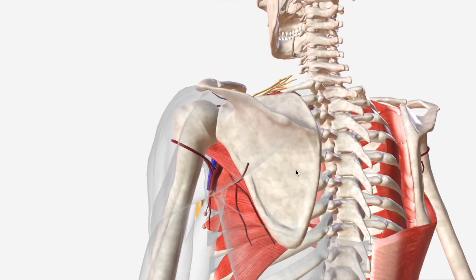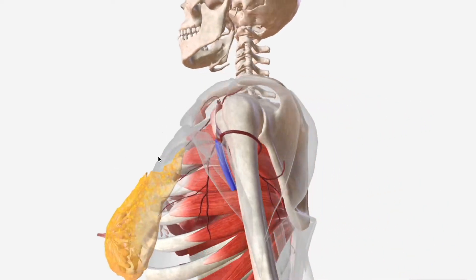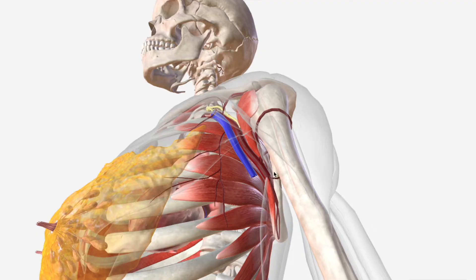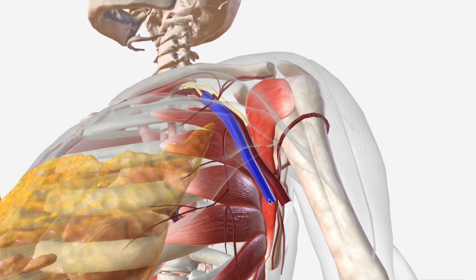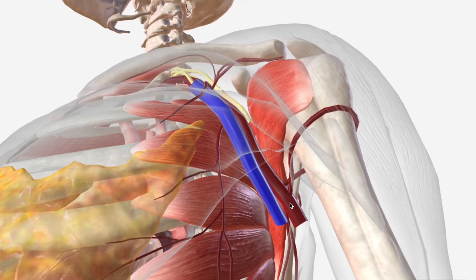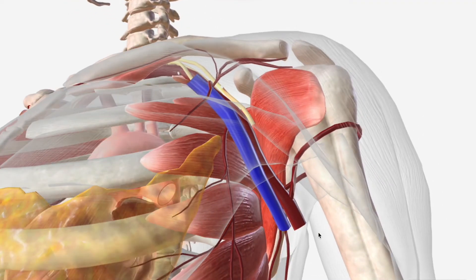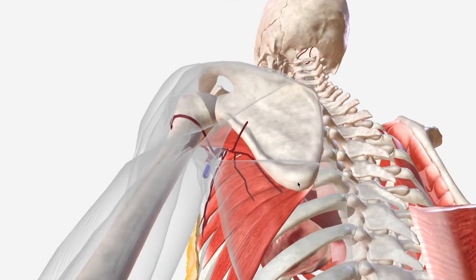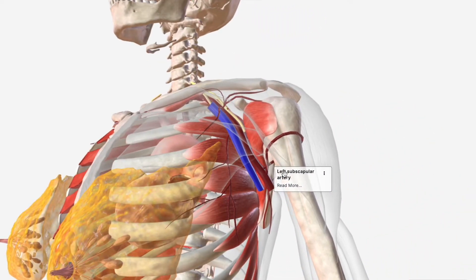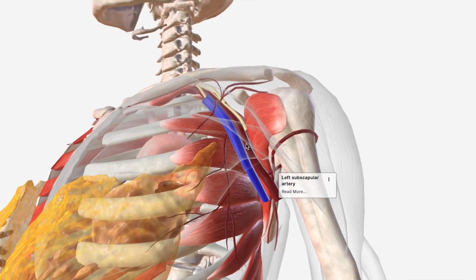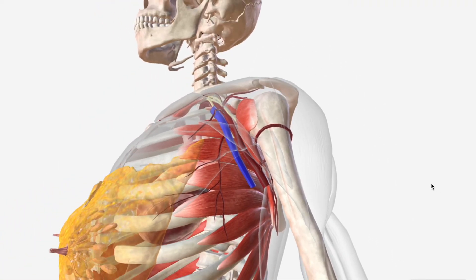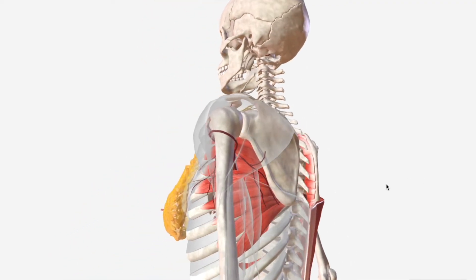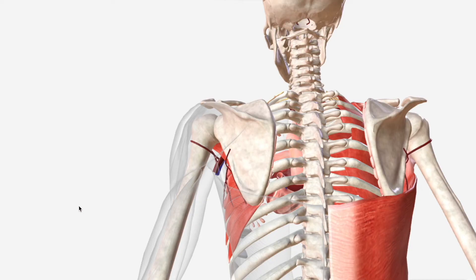One more interesting thing before we wrap up. The axillary artery, despite supplying all of the upper limb with its arterial blood, can actually be clamped for the purpose of surgery without endangering the survival of the limb. We can clamp it only at a specific location, which is just proximal to the origin of the subscapular artery and distal to the thyrocervical trunk, because the subscapular itself supplies enough redundant circulation into the upper limb that the limb will survive without the passage of arterial blood through this major conduit.